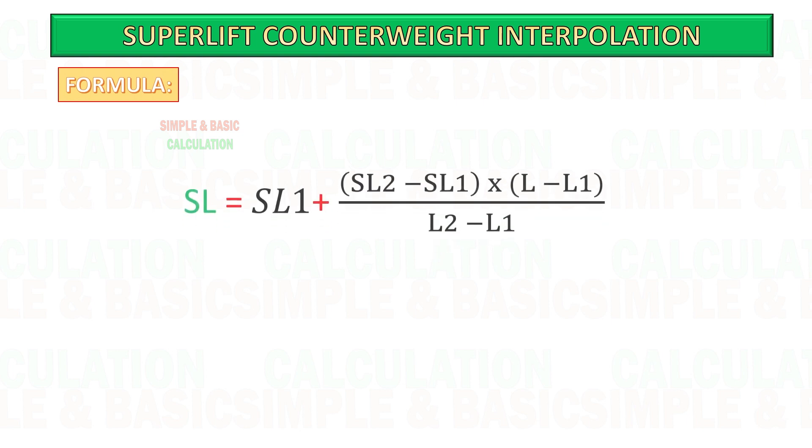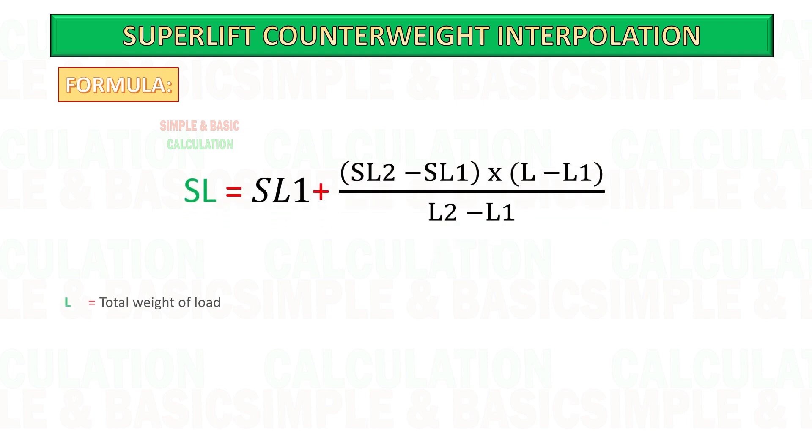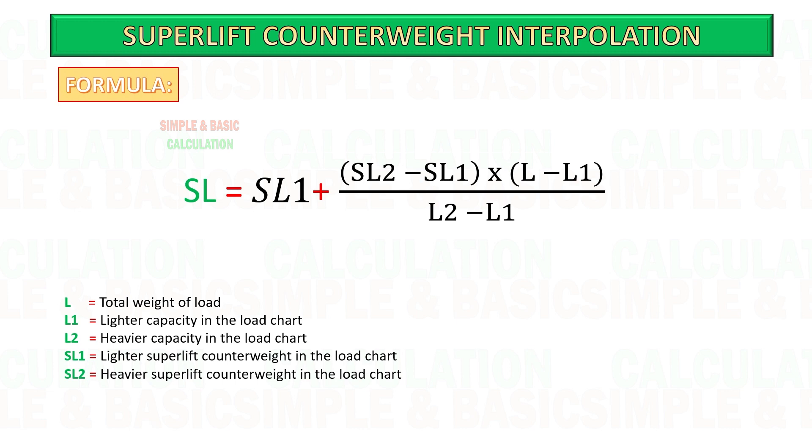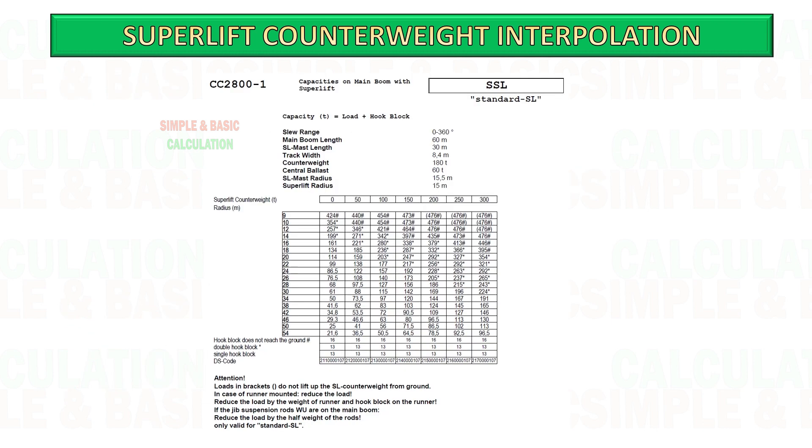This is the formula we will use for calculation. SL is the necessary superlift required for lifting. L is the total load. L1 and L2 is lighter and heavier capacity in the load chart. SL1 and SL2 is lighter and heavier superlift counterweight in the load chart.